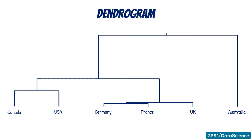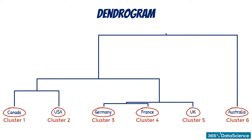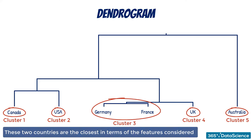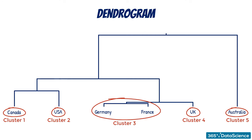Here is the dendrogram created on our country cluster data. Each line starts from a cluster, and you can see the names of the countries at the beginning of those lines. This shows that, at the start, each country is a separate cluster. The first two lines that merge are those of Germany and France — according to the dendrogram, these two countries are the closest in terms of the features considered. At this point, there are five clusters. From this point on, going up, Germany and France will be considered one cluster.